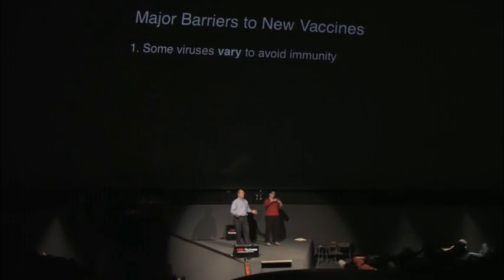So if we've been able to make vaccines against measles, mumps, and rubella, how come we can't make a good vaccine against the common cold, HIV, and the flu? I think there are two major barriers, and the first one is the one we always talk about—some viruses vary.